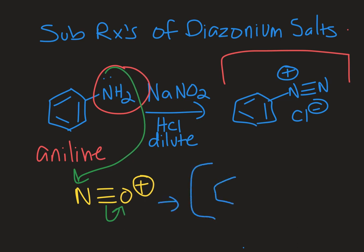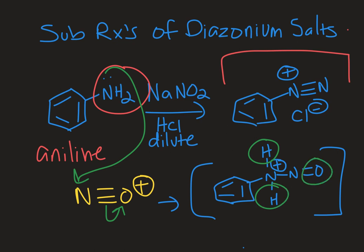So I get an intermediate that looks like this and then this is going to lose an equivalent of water. So these H's and this oxygen will come off.